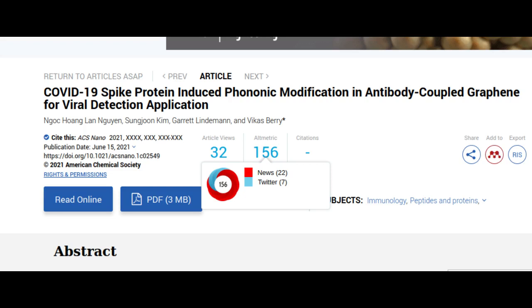In experiments, researchers combined sheets of graphene, which are more than 1,000 times thinner than a postage stamp, with an antibody designed to target the infamous spike protein on the coronavirus.